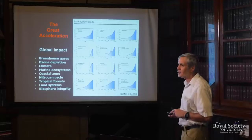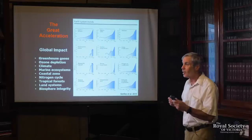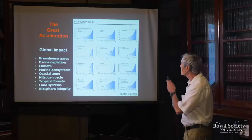We can say two things about these graphs. One is they are outside of Holocene norms. We can go back to the paleo record, the geological record, and look at what these look like for the past 12,000 years — these are all outside of Holocene norms. And the second thing we can say for sure is the major driver is human pressures, not natural variability in the Earth's system.